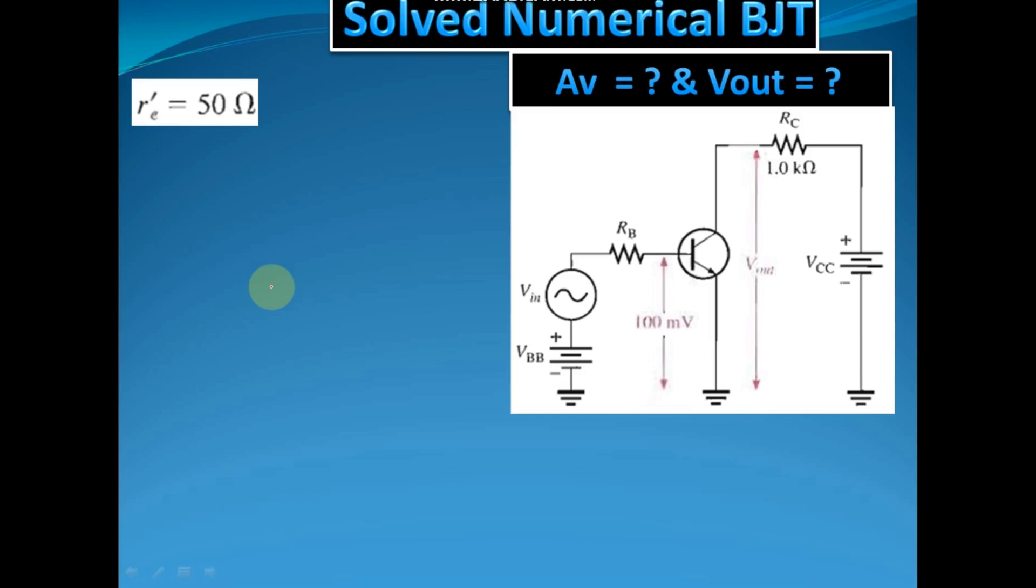Hello friends, welcome to Electronic Circuit Hub. Today we are going to solve one more numerical based on BJT. Today we have to find two parameters: Av and Vout.